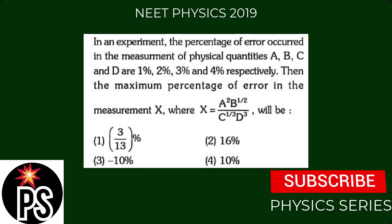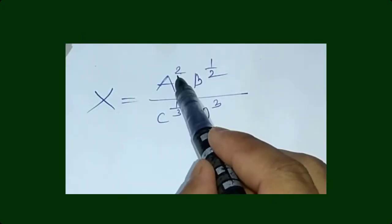Then we have to find the maximum percentage of error in the measurement X, where X is given. We can see that 2, 1/2, 1/3, and 3 are the powers of A, B, C, and D respectively.